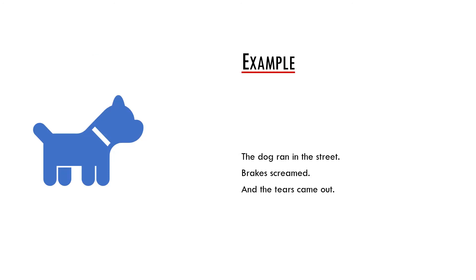Another issue in discourse processing are inferences. They are very important for understanding because thanks to them we fill in the information which is missing in the text. For example: 'The dog ran in the street. Brakes screamed and the tears came out.' These sentences do not have any shared reference and seem not to depend on each other. The only reason why we consider them as part of a coherent text is that we use inferences which bridge the sentences based on our real-world knowledge.